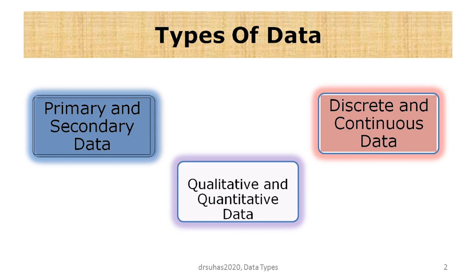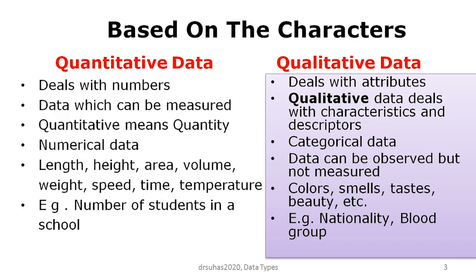Starting with the basic classification: qualitative data and quantitative data. Based on characters or attributes, we classify data as quantitative or qualitative. Quantitative data — as the word itself suggests — talks about quantity and numbers. All data expressed in numbers are called quantitative data. Importantly, these numbers can be measured, like the height of a person, hemoglobin percentage, or systolic blood pressure — all good examples of quantitative data.